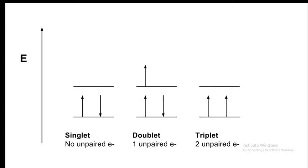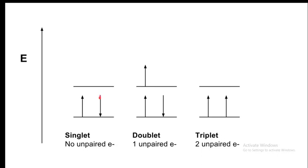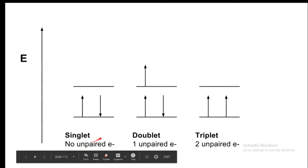We know that there are singlet state, doublet state, and triplet state for electronic levels. In a singlet state, there are no unpaired electrons — one electron has plus half spin and the other has minus half spin, so they cancel and the net spin is zero. The multiplicity formula is 2S plus 1. Substituting S equals zero, we get 2 into 0 plus 1, which is 1. So this is called the singlet state.